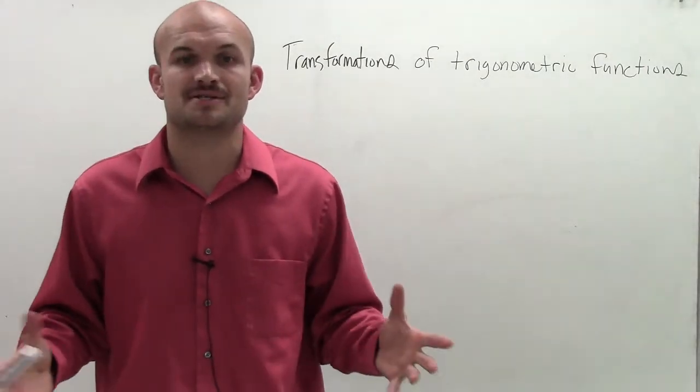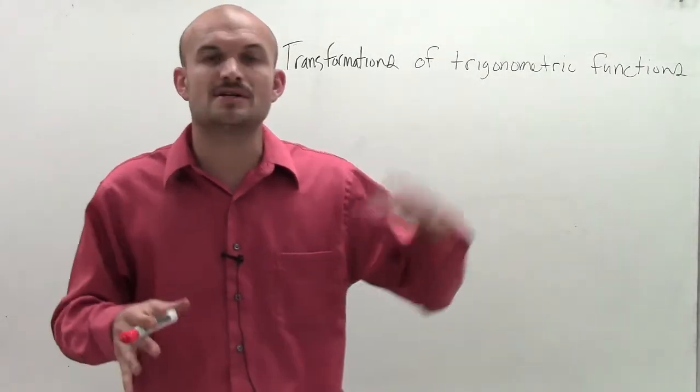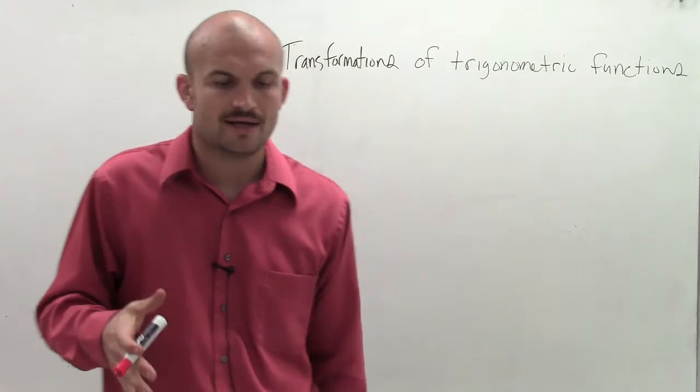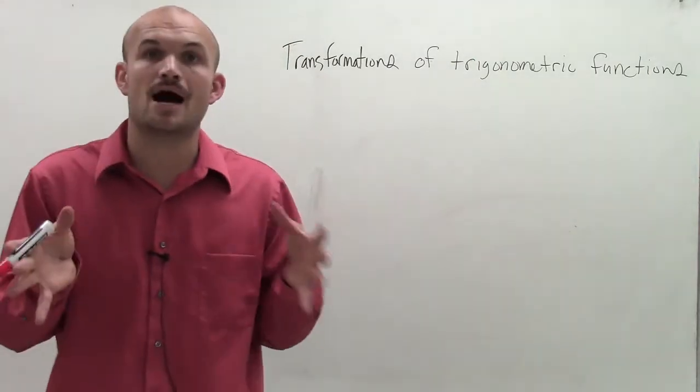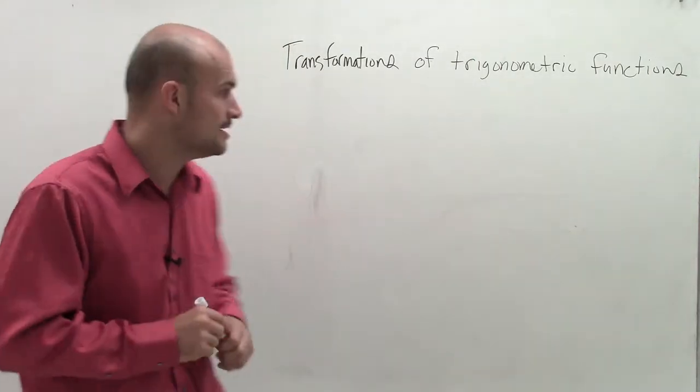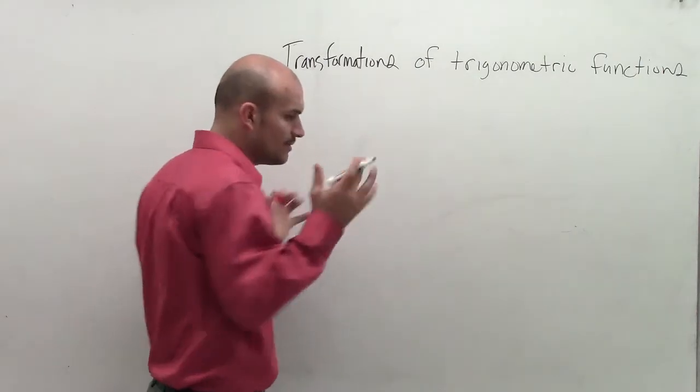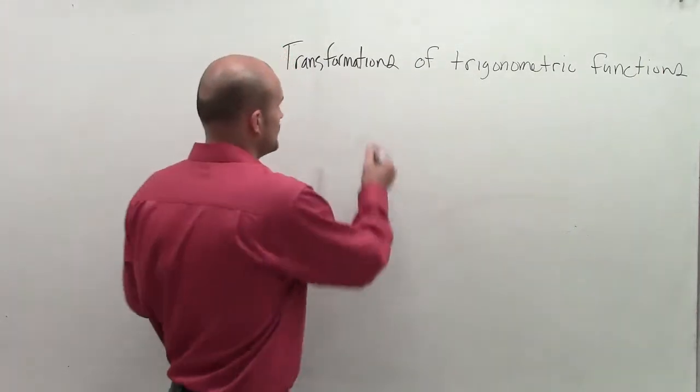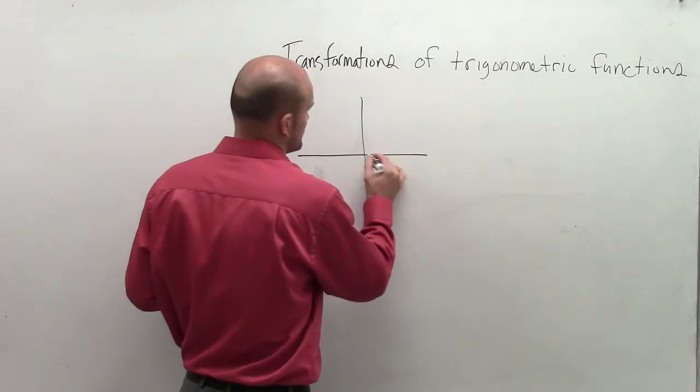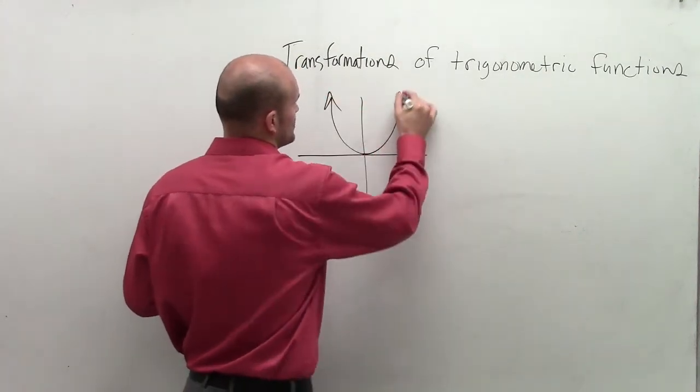We have transformations of trigonometric functions. We've learned how to graph a trigonometric function. Now we're going to talk about some translations - how we're going to move and alter that graph. I want to first go back and review what we've done with transformations with, say, the quadratic graph.